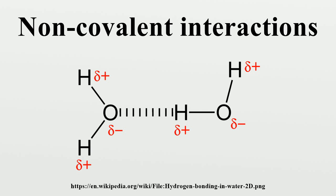Cation-pi interactions involve the positive charge of a cation interacting with the electrons in a pi system of a molecule. This interaction is surprisingly strong, and has many potential applications in chemical sensors. For example, the sodium ion can easily sit atop the pi cloud of a benzene molecule, with C6 symmetry. Anion-pi interactions are very similar to cation-pi interactions, but reversed. In this case, an anion sits atop an electron-poor pi system, usually established by the placement of electron-withdrawing substituents on the conjugated molecule.